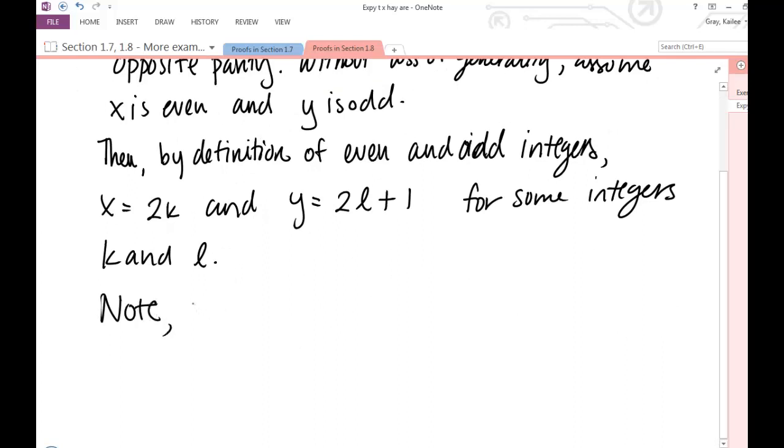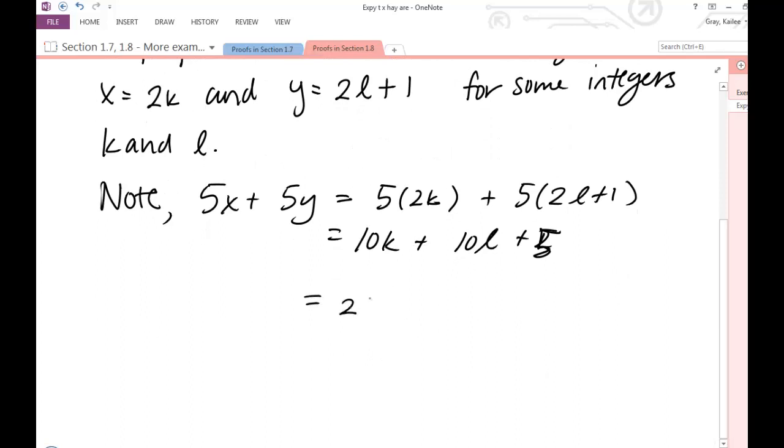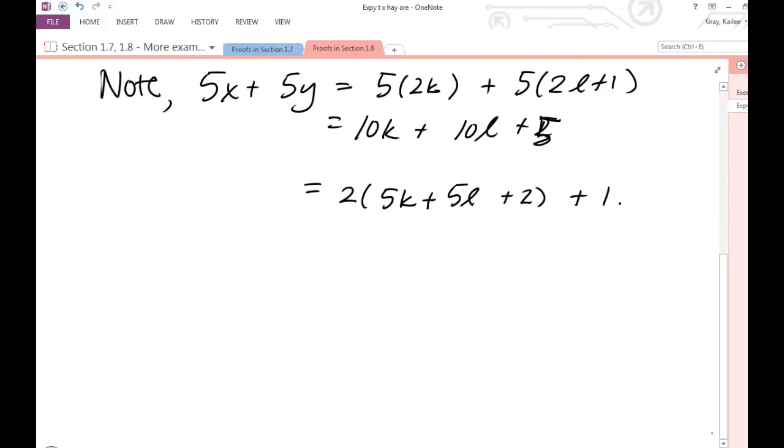So, note, 5x plus 5y is equal to, do that replacement, and make your algebra clear, but not crazy detailed here. You don't want to bore your reader. So your reader can be expected to fill in a couple algebraic gaps. So your reader should be able to go in and fill in what happened there. If you have any doubts that that wouldn't be possible, then include that step.